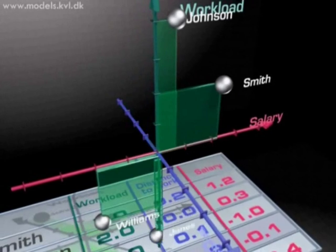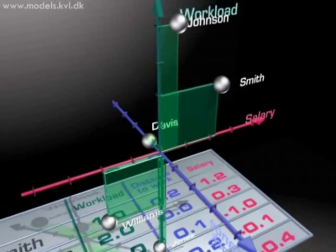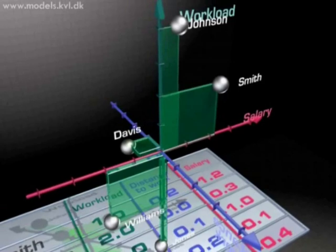If we had had, say, ten variables, then we would have had to use a ten-dimensional coordinate system. But we wouldn't be able to plot that.